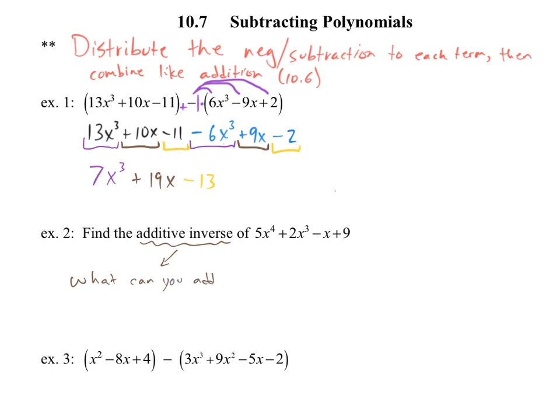So write it, don't write it, it's totally up to you. What can you add to a number to get 0? That's really what an additive inverse is. It's what number can you add to what you have to just make it drop out and give you a 0.